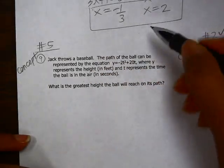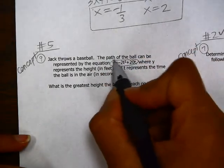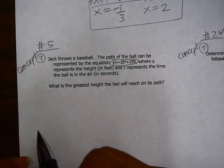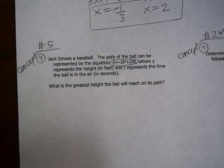Jack throws a baseball. The path can be modeled by the equation given, where y is the height and t is the time. What is the greatest height the ball will reach on its path?